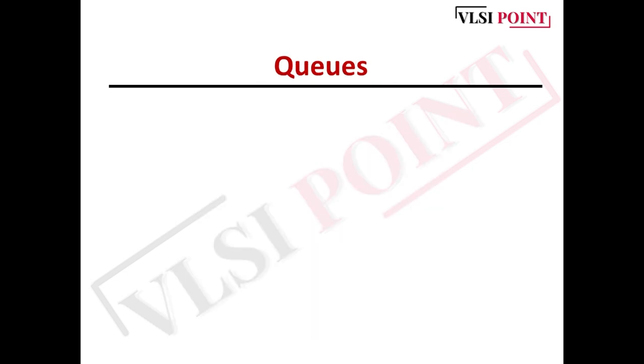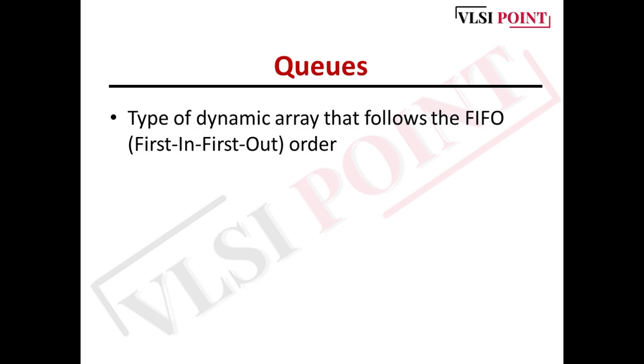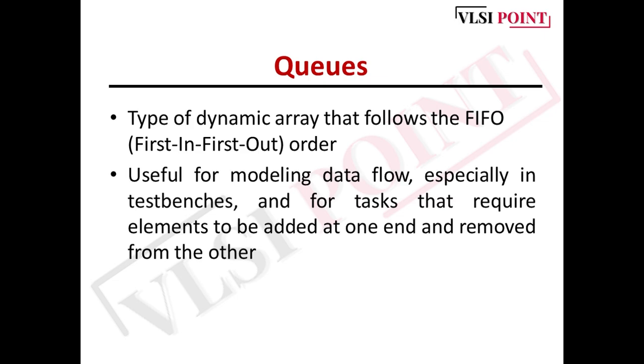Next is queues. SystemVerilog introduces a new data type that is queue which provides easy searching and sorting in a structure that is as fast as a fixed size array but as versatile as a linked list. These queues are a type of dynamic array that follows FIFO, first in first out order. Like a dynamic array, queues can grow and shrink but with a queue you can easily add and remove elements anywhere. In queues, new elements can be added and removed easily. The elements can be accessed from any location directly using the index.